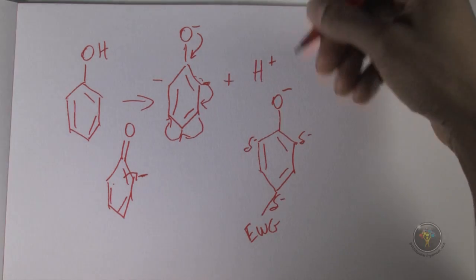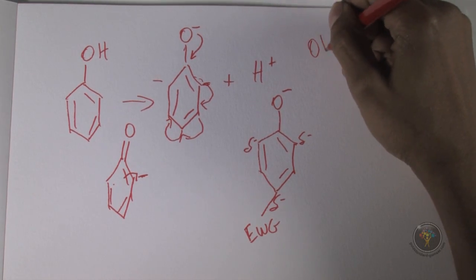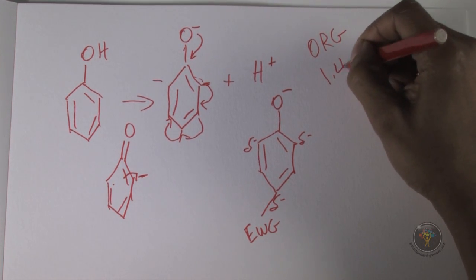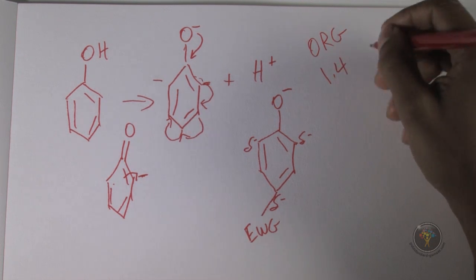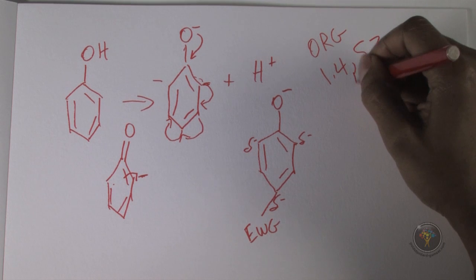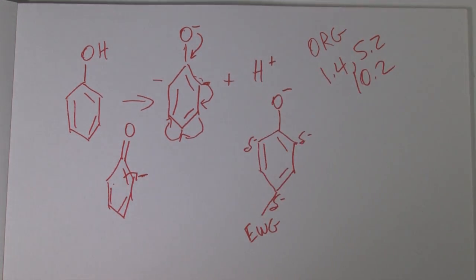Feeling comfortable about electron withdrawing groups and electron donating groups is important. If you need to review some information on resonance structures and so on, here are some sections from the Gold Standard book that you should take a look at. Thank you.